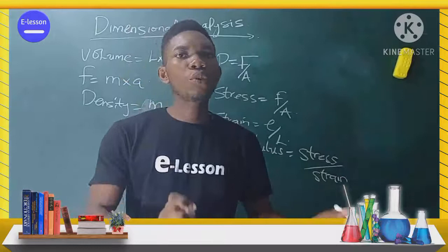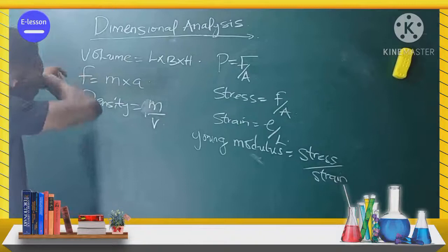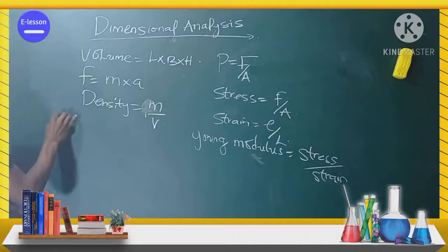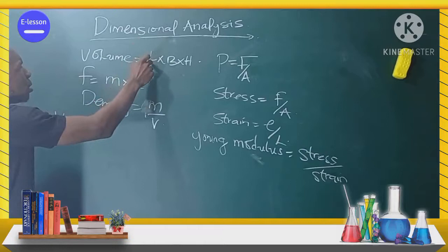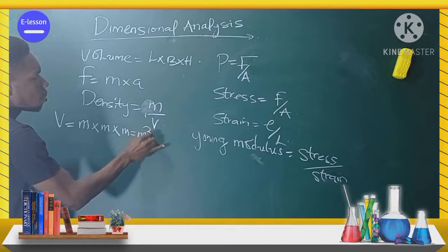If you know the formula, you should be able to determine the units of a derived quantity. For example, for volume: volume is length times breadth times height. The unit for length is m, the unit for breadth is m, the unit for height is m, and therefore the unit for volume is m³.